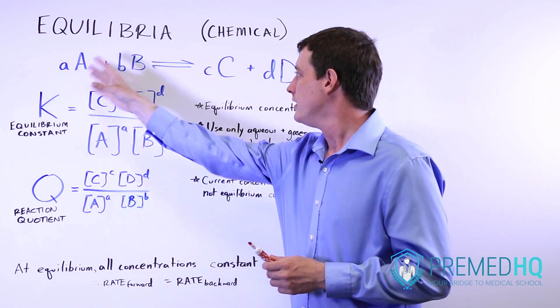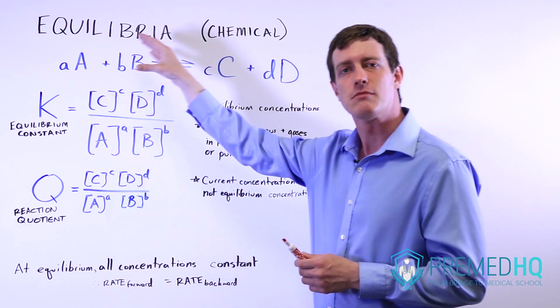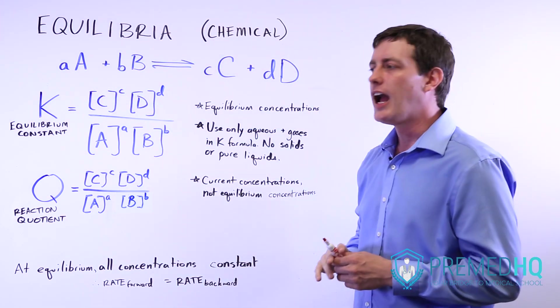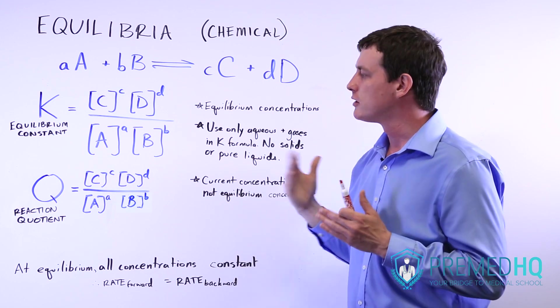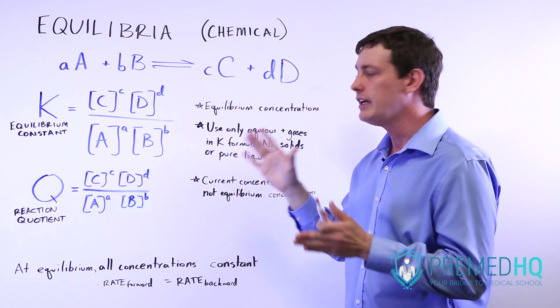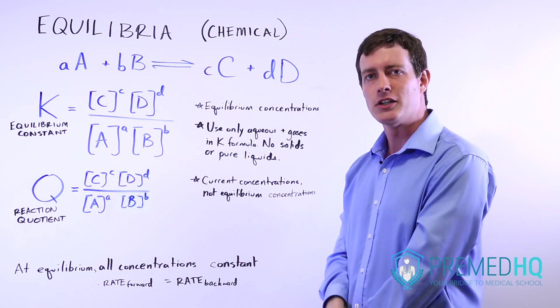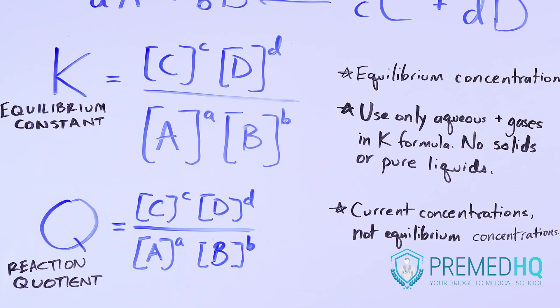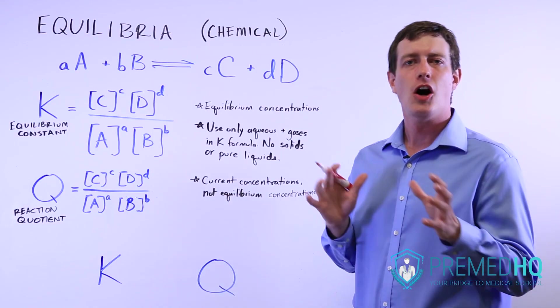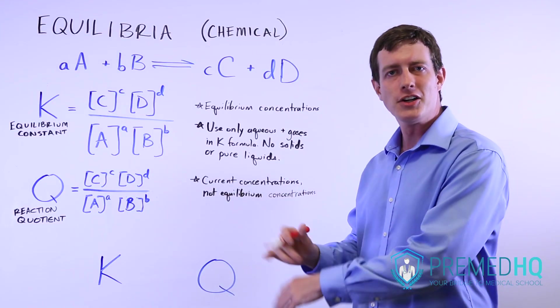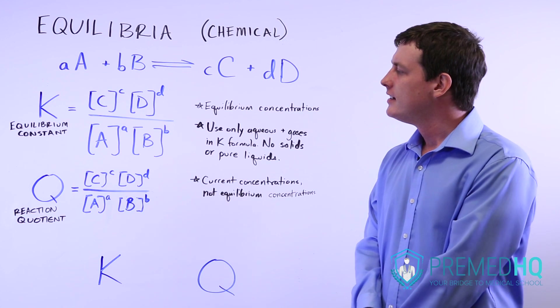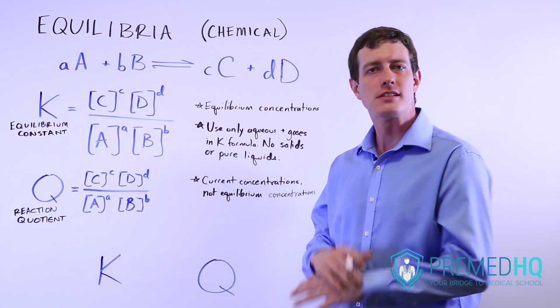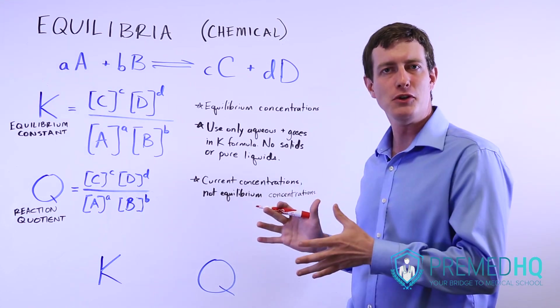And so Q tells you where a reaction is relative to equilibrium. Is it more favoring the reactant side? Is it more favoring the product side? Because chemical reactions always move toward their equilibrium concentrations, Q can tell us a lot about the state of where a reaction is and which way it's going to move.